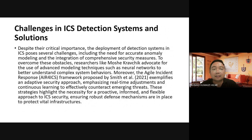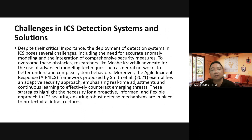Deployment of detection systems and IDS poses several challenges. To overcome these obstacles, researchers like Moshi and Kravik advocate for the use of advanced modeling techniques such as neural networks to better understand complex system behavior. Moreover, the Agile Incident Response for ICS framework proposed by Smith et al. 2021 amplifies the adaptive security approach, emphasizing real-time adjustment and continuous learning to efficiently counter emerging threats.